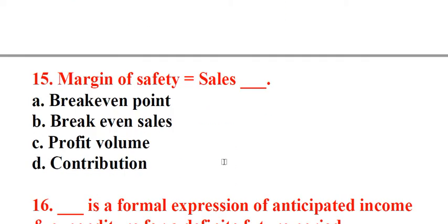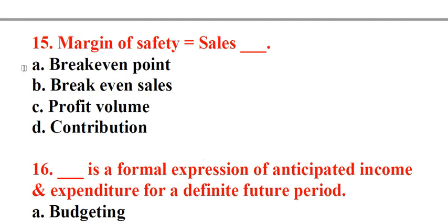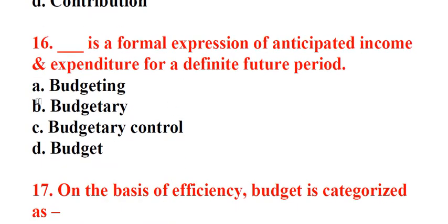Question 15: Margin of safety equals Sales minus underscore. A. Breakeven point, B. Breakeven sales, C. Profit volume, D. Contribution. Answer: B. Breakeven sales. Question 16: Underscore is a formal expression of anticipated income and expenditure for a definite future period. A. Budgeting, B. Budgetary, C. Budgetary control, D. Budget. Answer: D. Budget.